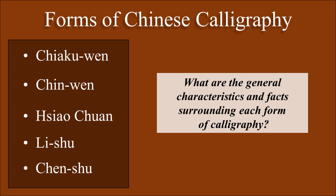For example, Chai Kou Wen is also known as bone or shell script because it was mostly written on bones and shells, and it was an ancient form of writing closely bound to the art of divination and was mainly pictographic in nature.